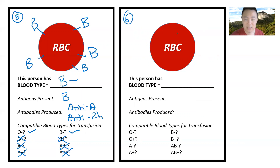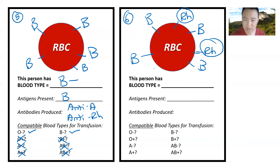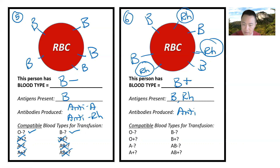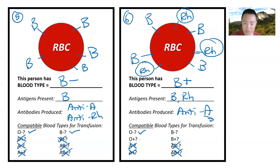Case number six: I've got a red blood cell that has the letter B and RH everywhere. This person clearly has B and RH, so this is B positive. Antigens present: B and RH — it's cool with those two. But it doesn't have the letter A, so it produces anti-A. Any blood type with the letter A is out. The compatible blood types for transfusion are O negative, O positive, B negative, and B positive.